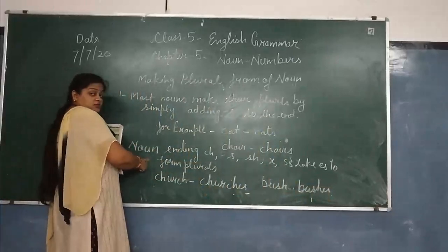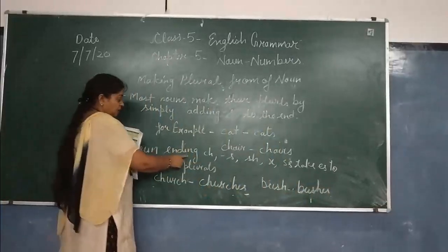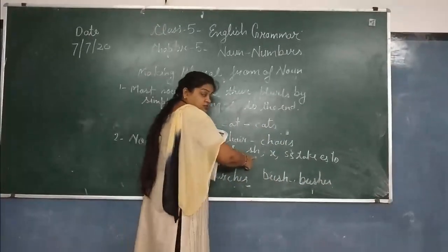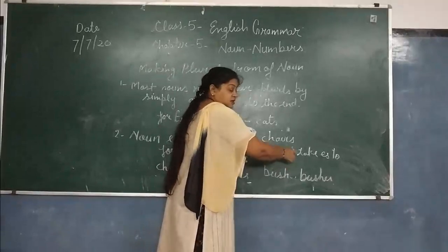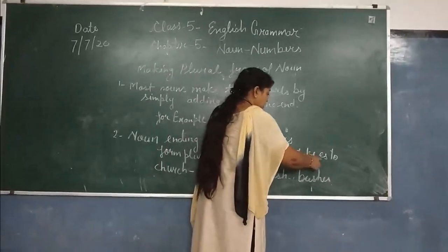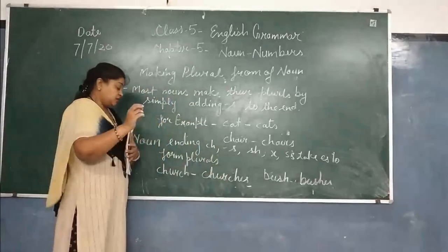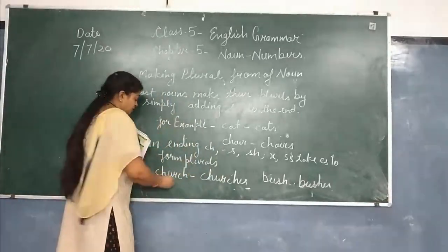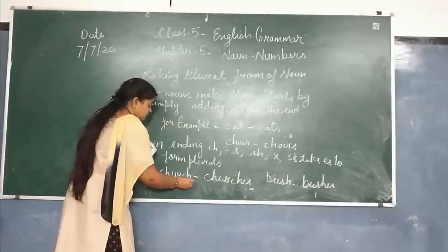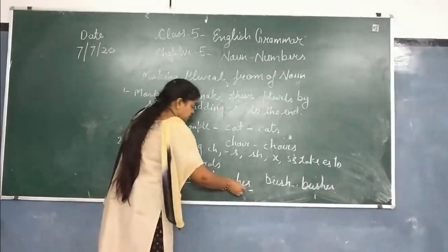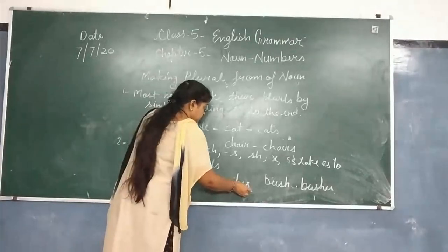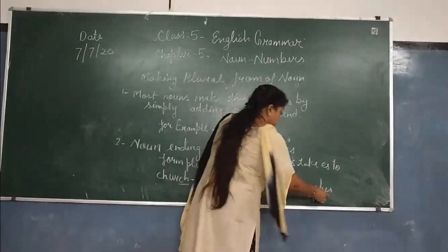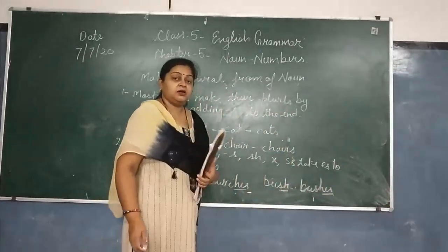The second rule is: when a noun ends in CH, SH, S, or SS, we add ES at the end of the noun to make it plural. For example, 'church' ends in CH, so we add ES. 'Bush' ends in SH, so we add ES to make the plural.